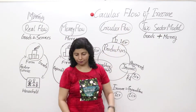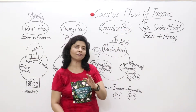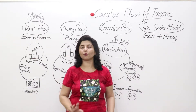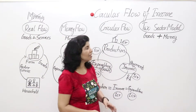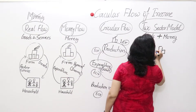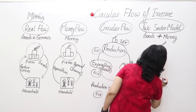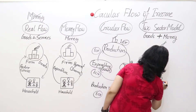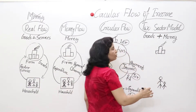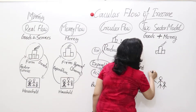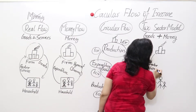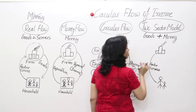Now let's discuss the two sector model. In the two sector model, we assume there is no government and no foreign country — no exports or imports. We have only two sectors: firms and households. Households give factor services to firms. What do they give? Factor services.